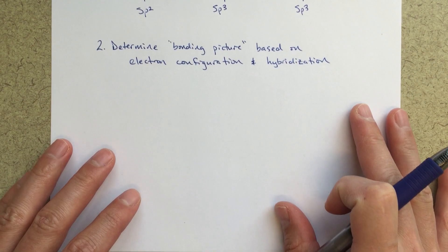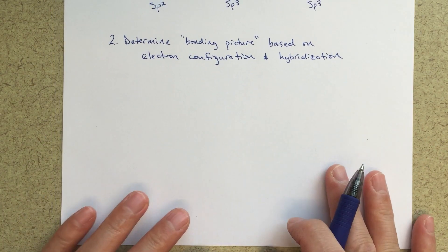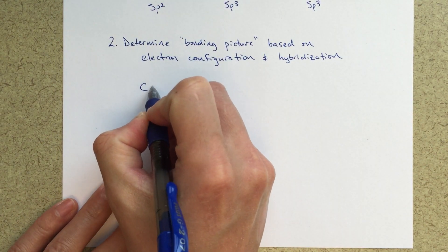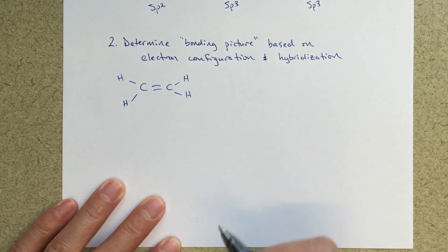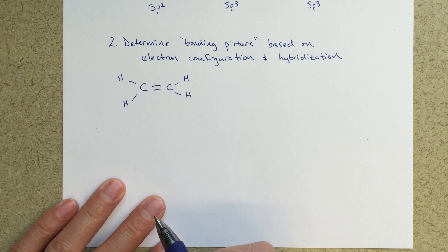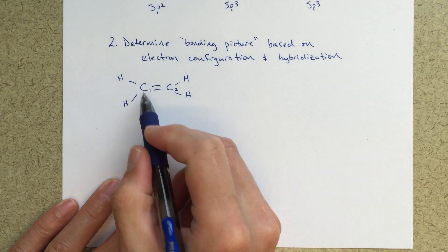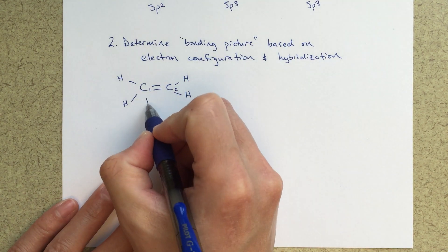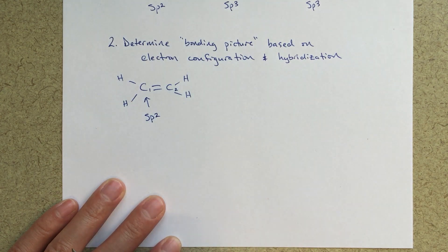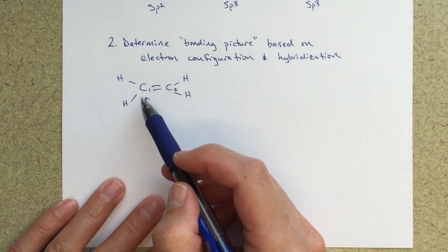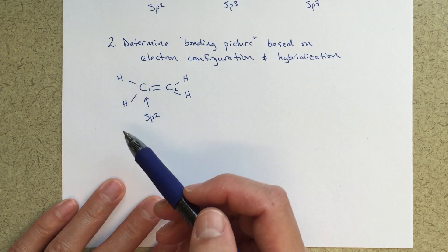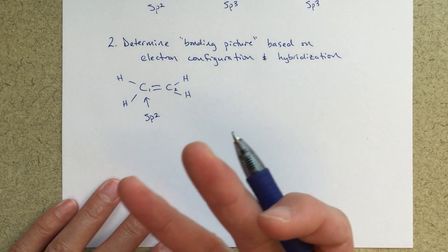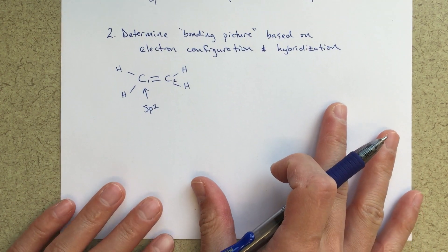Now let's talk about the bonding picture based on electron configuration and hybridization. The most common example we'll use is ethylene. We'll discuss C1 and C2 — starting with C1. The first thing to do is determine hybridization: C1 is sp2 hybridized. The way I know that is the trigonal planar geometry around C1, with three groups and 120 degree bond angles.